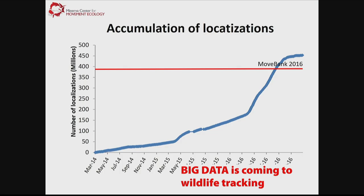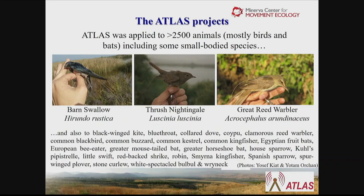The downside of the Atlas system is that it is relatively local — the area covered by base stations is around 25 by 35 kilometers in our case. The system currently tracks about 2,500 animals, including very small species like the barn swallow that weighs only 20 grams — something you could not imagine putting GPS on.